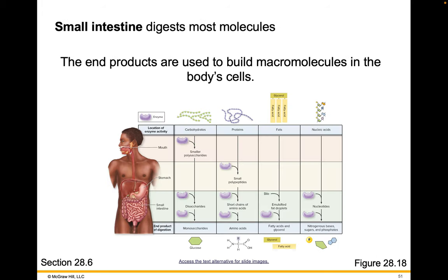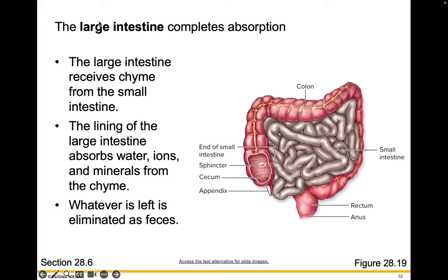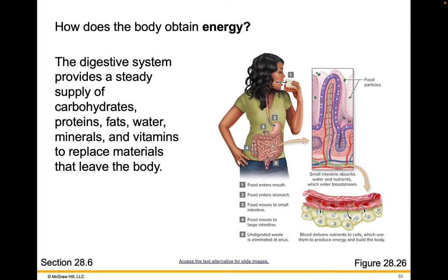The small intestine digests most molecules, and the end products are used to build the macromolecules in body cells — carbohydrates, proteins, fats, and nucleic acids. The large intestine completes absorption. Chyme is received from the small intestine, and the lining of the large intestine absorbs water, ions, and minerals from the chyme. Whatever is left is eliminated as feces. The digestive system provides a steady supply of carbohydrates, proteins, fats, water, minerals, and vitamins to replace the materials that leave the body.